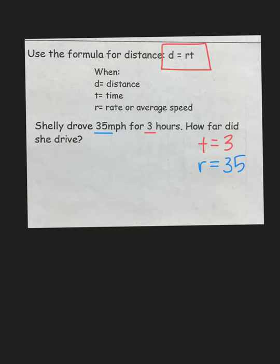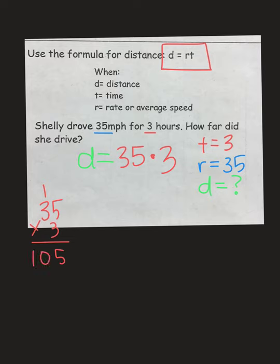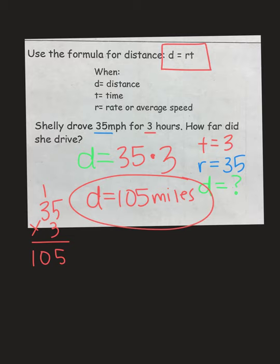So, we're looking for our distance. We can use those numbers to plug it back into our equation. So, distance equals rate, which was 35, times time, which was 3. When I do 35 times 3, 5 times 3 is 15. 3 times 3 is 9. Plus 1 is 10. So, my distance equals 105, and our units should be miles. Done.